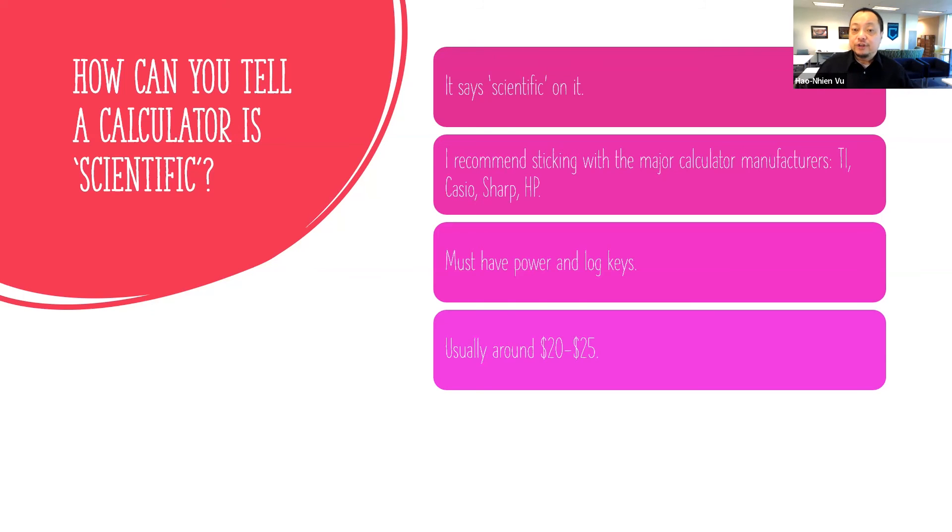A scientific calculator usually costs around 20 to 25 dollars. A calculator that's less than 10 dollars is probably not good enough and one that's 50 or 100 dollars is probably way overkill.